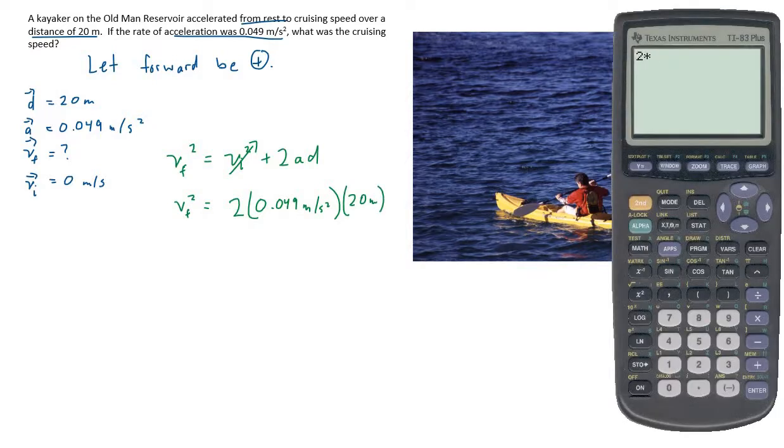So if we do the math, we've got 2 times 0.049 times 20, which is 1.96. Have a look at our units. We had meters per second squared, and we times that by meters. So we end up with meters times meters, which is meters squared per second squared. All of this is equal to the final velocity squared.